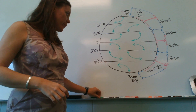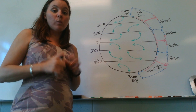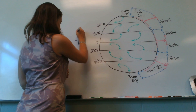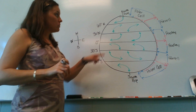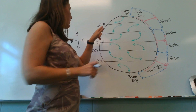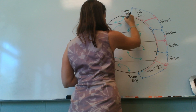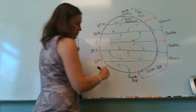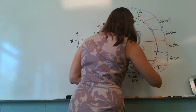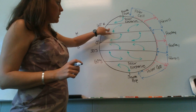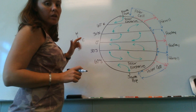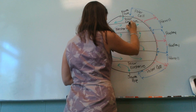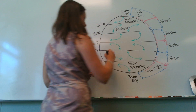Now we're going to name these wind belts. Winds are always named for the direction that they come from. So for reference: north, south, east, west. Up here at the North Pole, these winds are coming from the east — so these are polar easterlies. Same thing down here coming from the east: polar easterlies. The winds between 60 degrees north and 30 degrees north are coming from the west, so we call these the westerlies. Same thing down here between 30 degrees south and 60 degrees south — these are also called the westerlies.